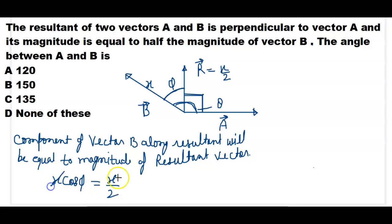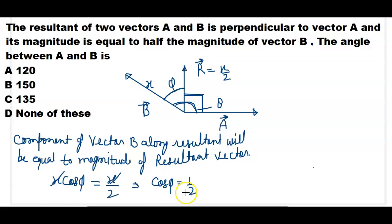Cancelling X from both sides, cos phi is equal to 1 by 2. Therefore, angle phi is equal to 60 degrees.